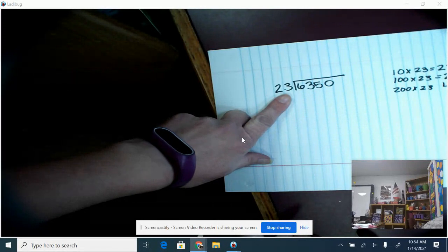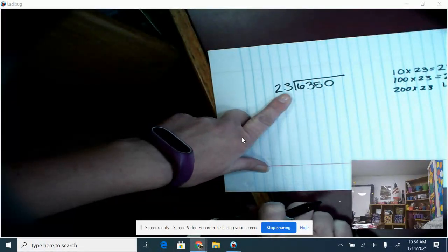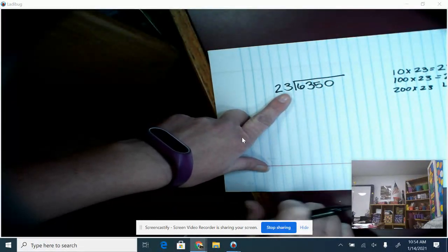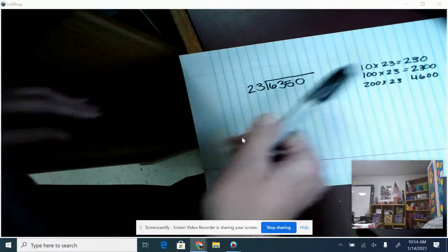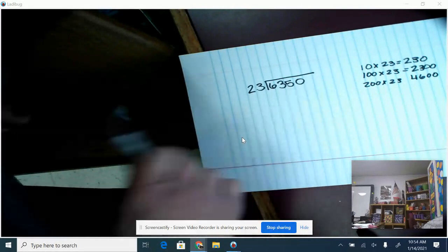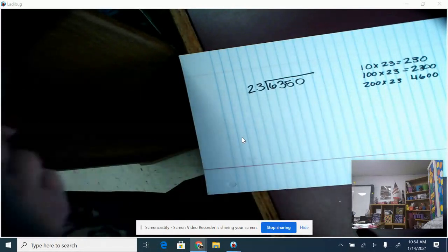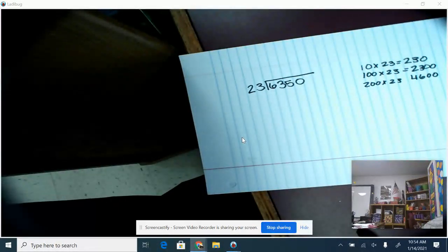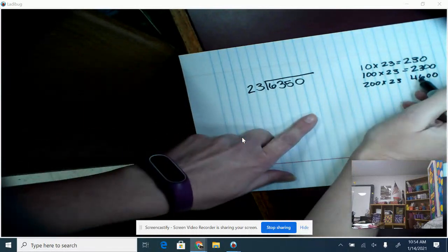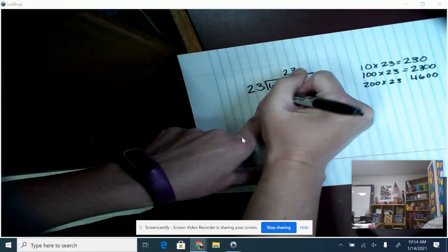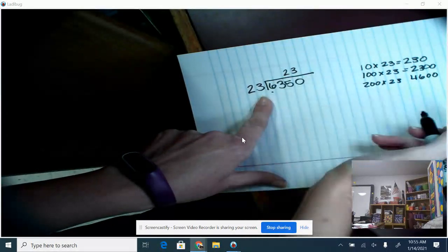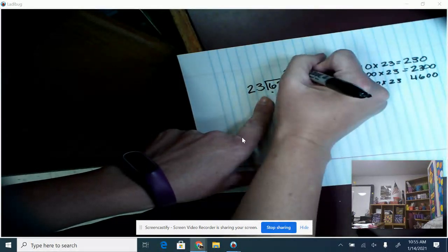Some of you want to get exactly on the number, but you're spending a lot of time trying to do that. So this strategy will help you to not have to get right on the number, but to still kind of get close, even if you have to do a few extra steps. So that gives me 4,600, so I'm going to put my 200 here.